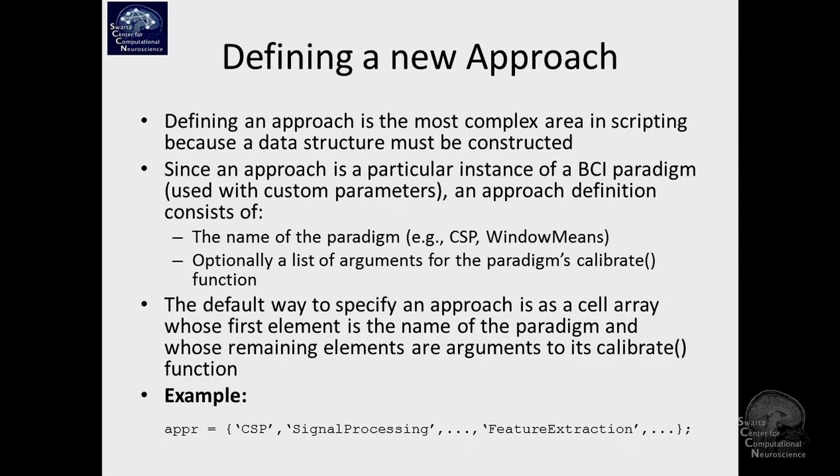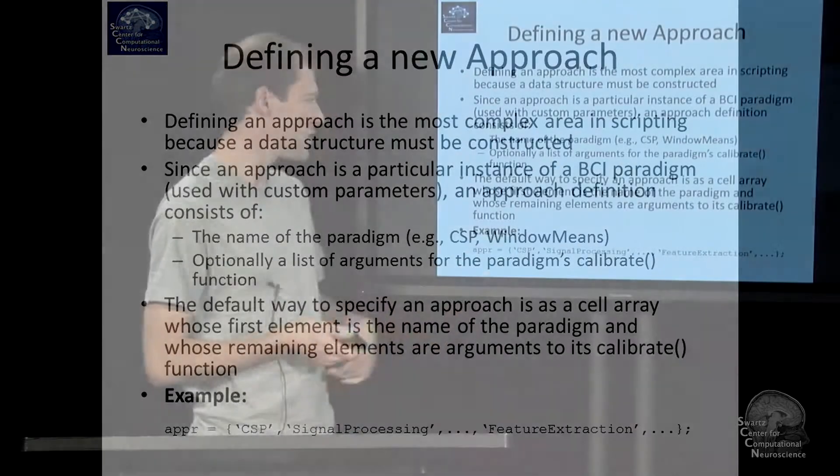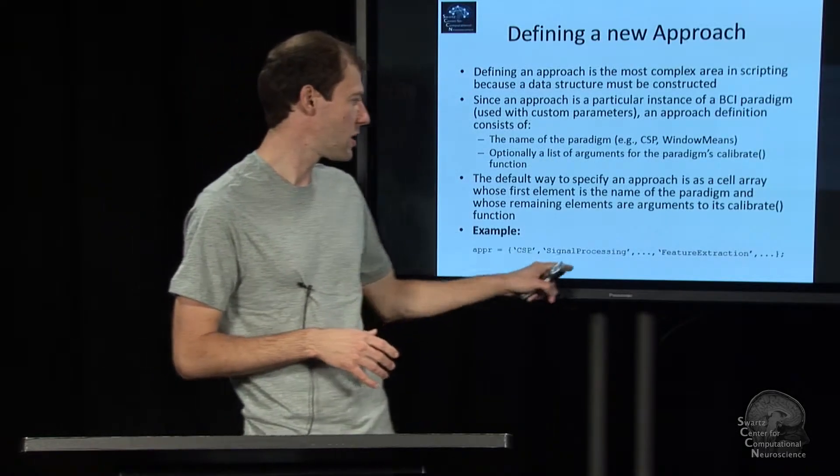Basically any approach refers to a BCI paradigm, so one out of those that are predefined. For example, this approach done here says I want to use the common spatial patterns paradigm CSP, and secondly optionally you can pass in parameters that customize this paradigm. The paradigm always has defaults for everything in from the get-go, so you don't have to pass anything, but to adapt it to your problem you would go on and pass in parameters.